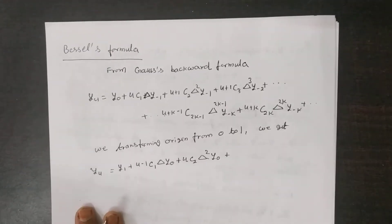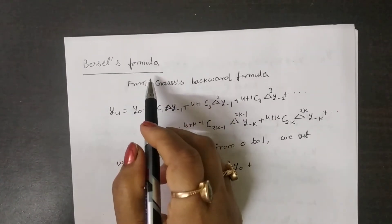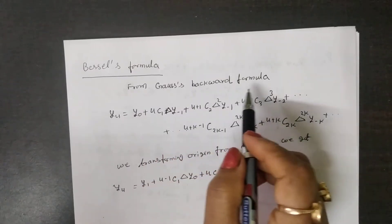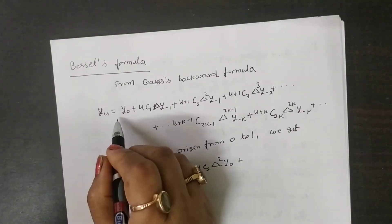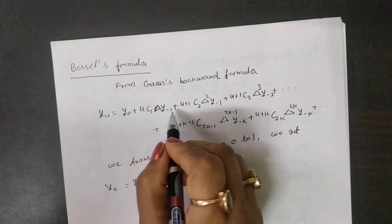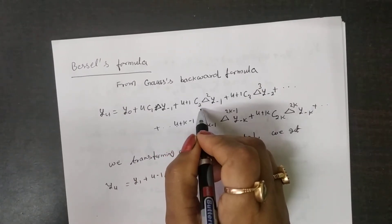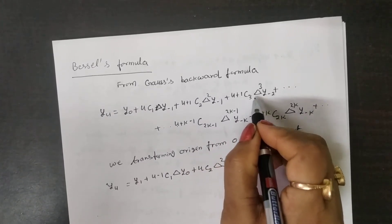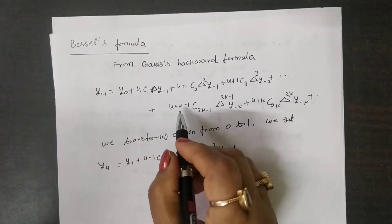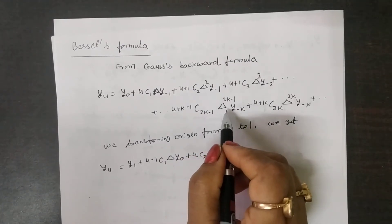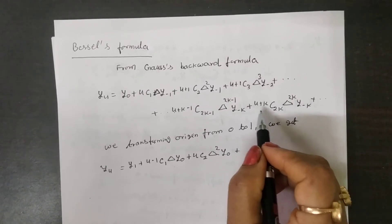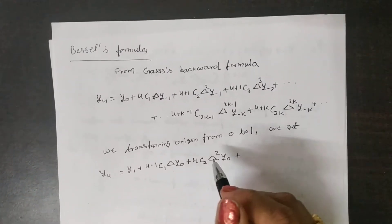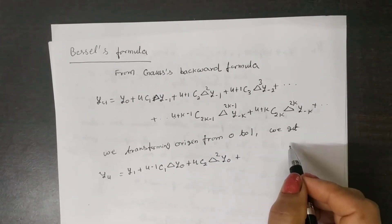Yes students, today I have defined for you Bessel's formula. For the Bessel formula, we use the Gauss backward formula. From the Gauss backward formula, we know that y(u) is equal to y0 plus u·C1·delta·y(-1) plus (u+1)·C2·delta²·y(-1) plus (u+1)·C3·delta³·y(-2), up to (u+k-1)·C(2k-1)·delta^(2k-1)·y(-k) plus (u+k)·C(2k)·delta^(2k). From this formula, we are transforming the origin from 0 to 1.